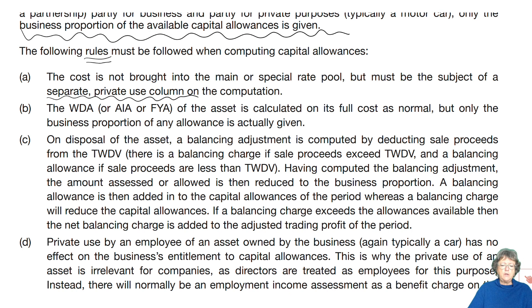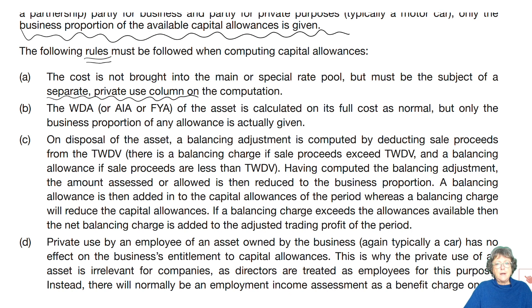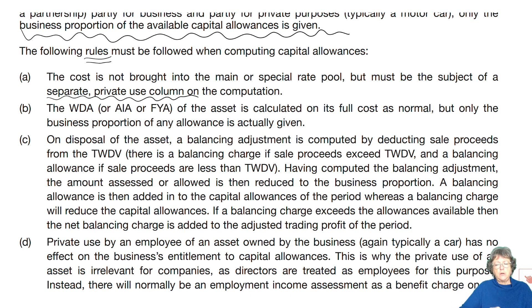You do get written down allowance, or FYA if applicable, or AIA if it's a private use asset that's not a car, as normal. But then we have to do a separate calculation in order to claim in the allowances column only the business proportion.